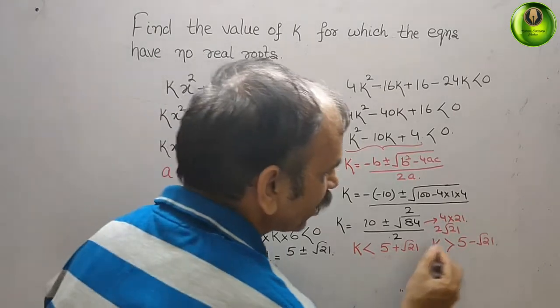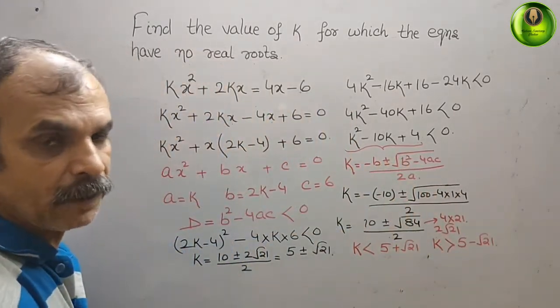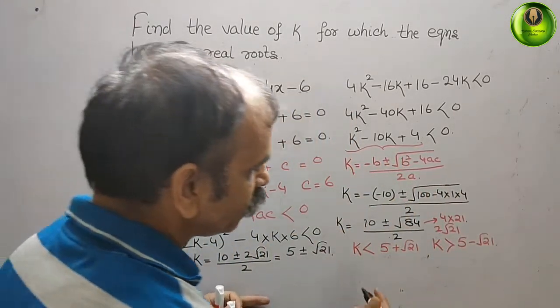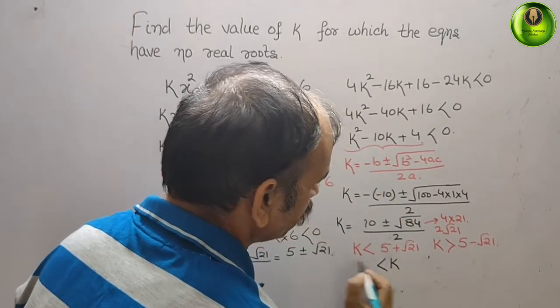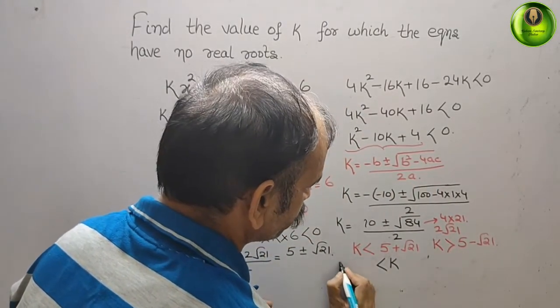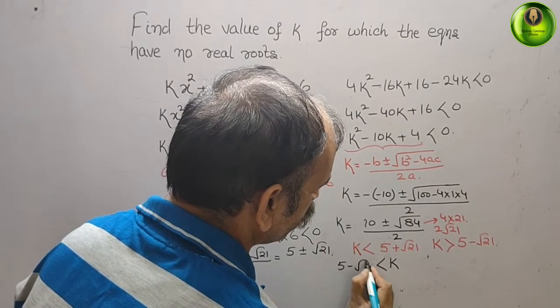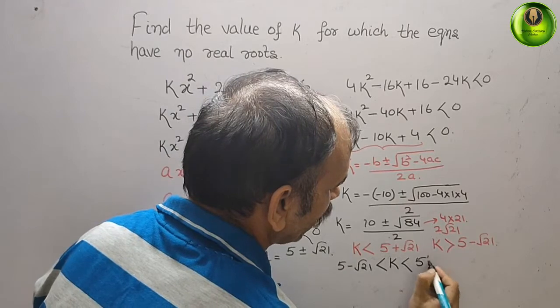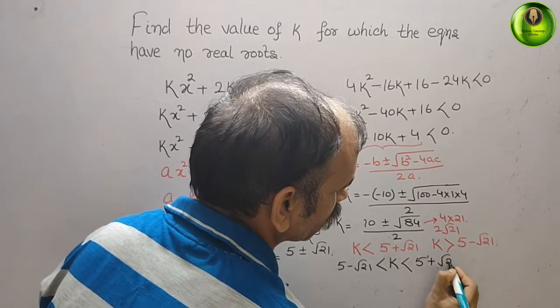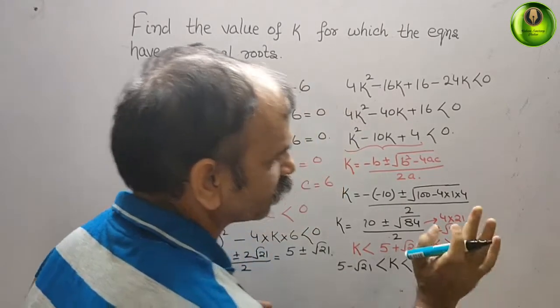Now, can we make the relation between them? Yes, we can make. So that is your answer: k > 5 - √21 and k < 5 + √21. This is your answer.